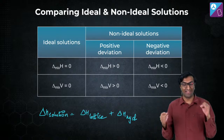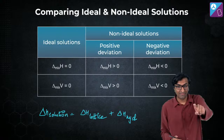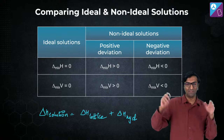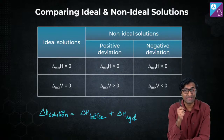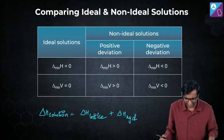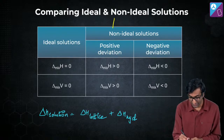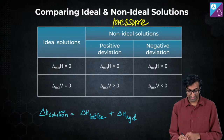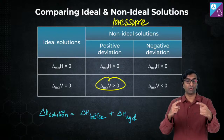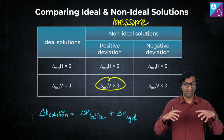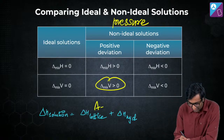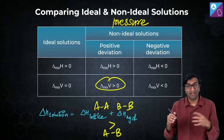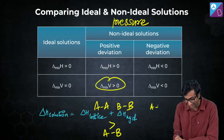For an ideal solution: ΔH of mixing = 0 and ΔV of mixing = 0. For positive deviation: ΔH_mixing > 0 and ΔV_mixing > 0, meaning partial pressure is more than expected — it vaporizes easily, and A-A and B-B interactions are stronger than A-B interactions. For the P versus x graph, positive deviation curves upward; for the T versus x graph, it curves downward — they're exact opposites.